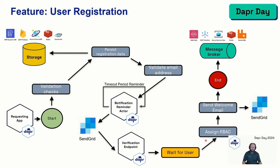If they do click on the link, it's going to assign any roles they need. If this required provisioning a new tenant, we'll probably kick off a separate workflow for that. Then send a welcome email using the SendGrid binding with another template — put their name in there, email address, link to how they sign in, and then end. There are often other services interested in knowing that a user has been registered. If it requires spinning up another tenant, maybe we put this in a queue so another service can pick that up and provision it.